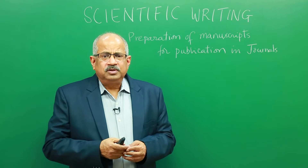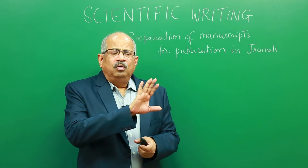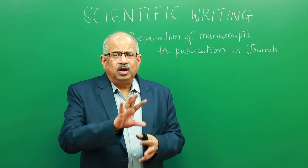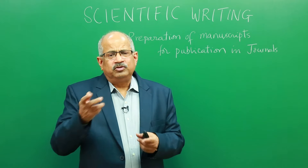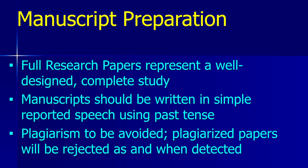In the next few slides, I will describe the various steps and essential requirements of manuscript preparation. There are three different types of publications: research paper, short communications, and review articles. How your research falls into those categories — whether it is a research paper or short communication — will also be described. If you have a good body of work, it can be submitted as a full research paper, which normally represents a well-designed, complete study.